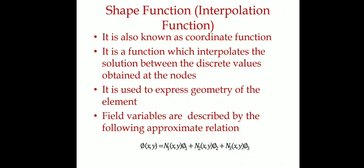We have an example of displacement, which is a variable — a displacement variable. The definition of a field variable is: φ(x,y) = N1(x,y)·φ1 + N2(x,y)·φ2 + N3(x,y)·φ3.